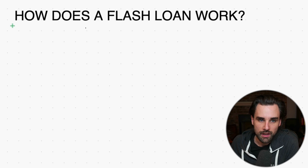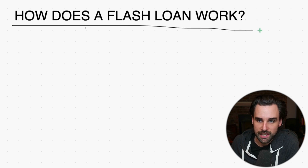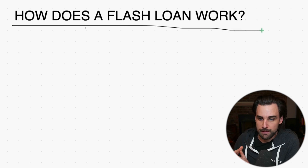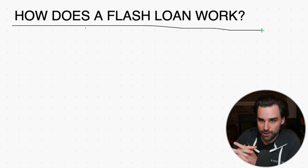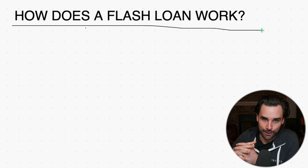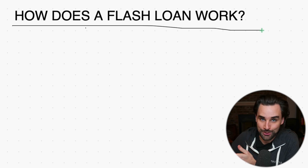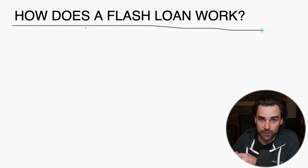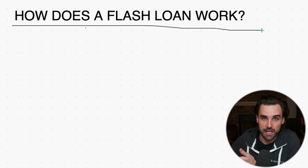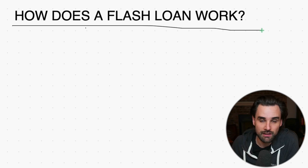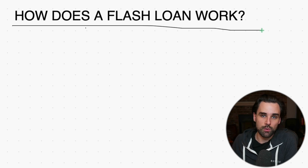So how does a flash loan work? You can borrow millions of dollars of cryptocurrency as long as you pay it back in the same transaction instantly. There are lots of things you can do instantly on the blockchain, like arbitrage trading. People use flash loans a lot for trading bots, and they use it for DeFi to give themselves more leverage.